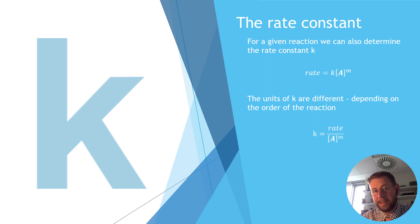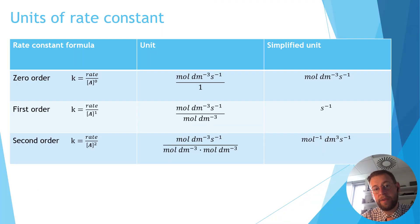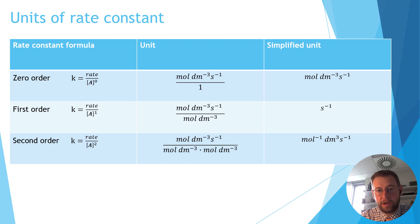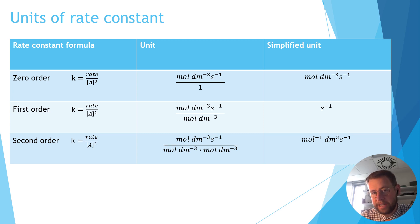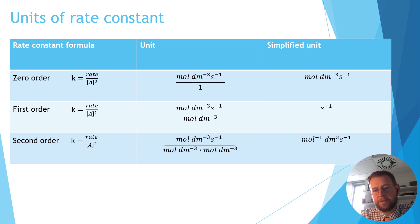That is what we'll do with real data in the next presentation — find a numerical value for the rate constant K. But before we do that, we need to look at what the units of K would be, because that depends on the order of reaction. For a zero order reaction, K equals the rate divided by the concentration of A to the power of zero. Anything to the power of zero is one, so we take the units of rate — moles per decimeter cubed per second — and divide by one. So for a zero order reaction, the units of K are the same as the units of rate: moles per decimeter cubed per second.